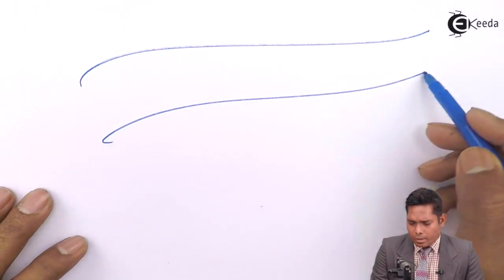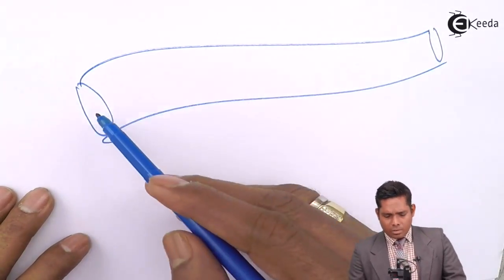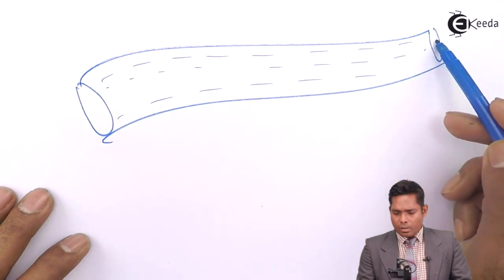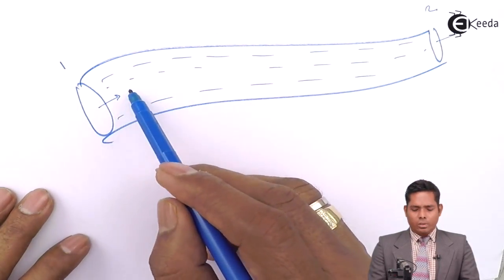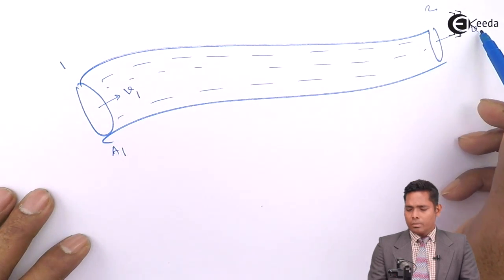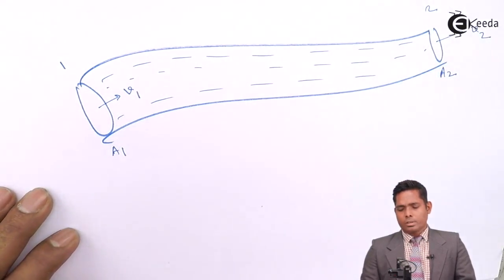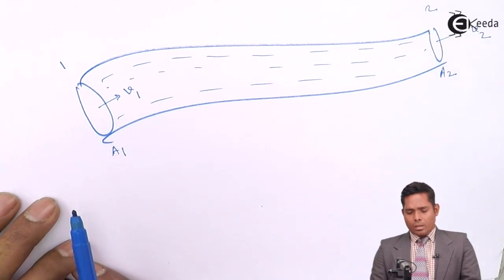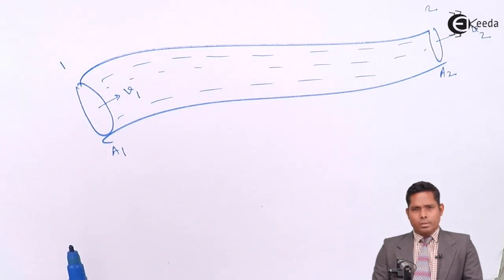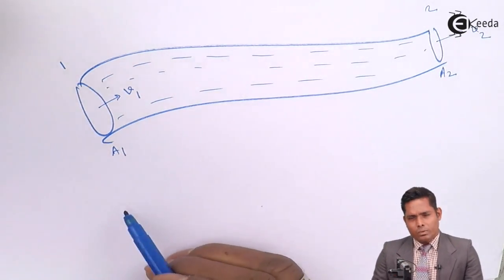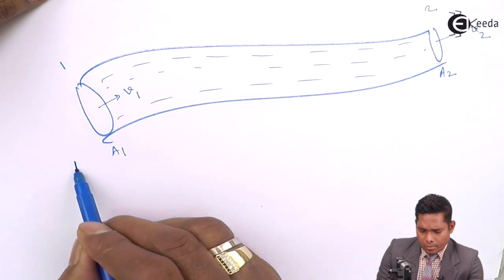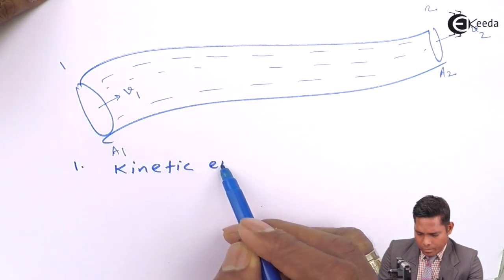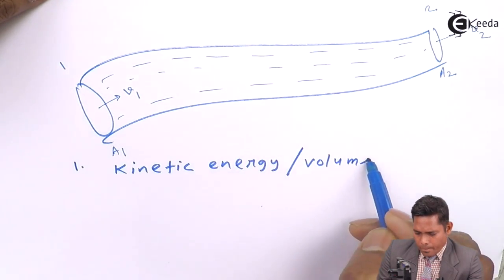Now we will find the different types of energy in case of a liquid flowing in a tube of variable cross-section. Suppose the liquid is flowing in at one end and exits at another. This cross-section has area A1 with velocity V1, and here the velocity is V2 with cross-section area A2. Now in case of a liquid flowing, it has got three types of energy — we will define and find the formula for kinetic energy per unit volume.